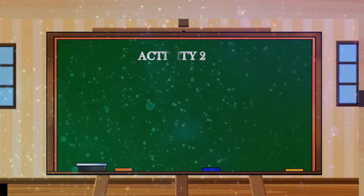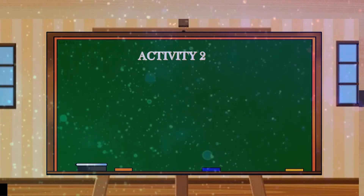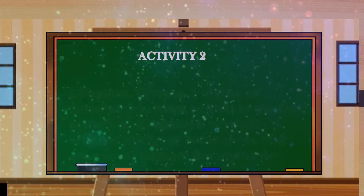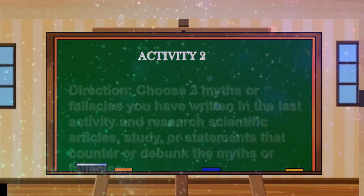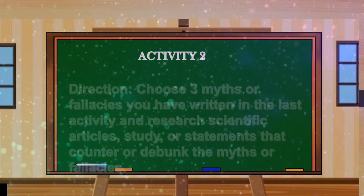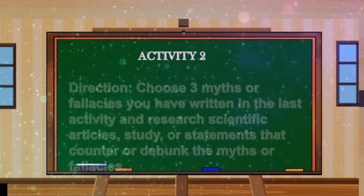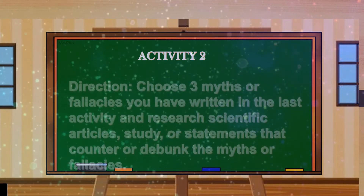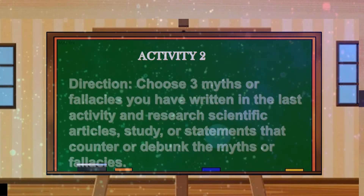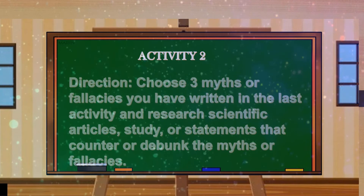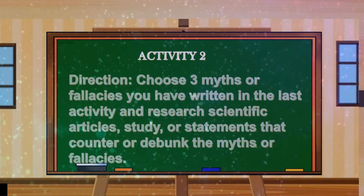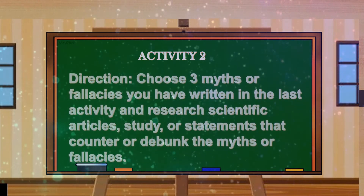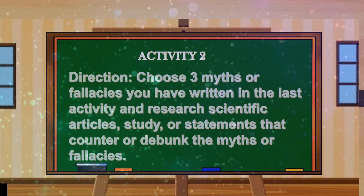Activity number two: Choose three myths or fallacies you have written in the last activity and research scientific articles, studies, or statements that counter or debunk the myths or fallacies.